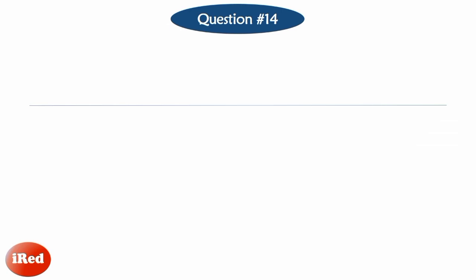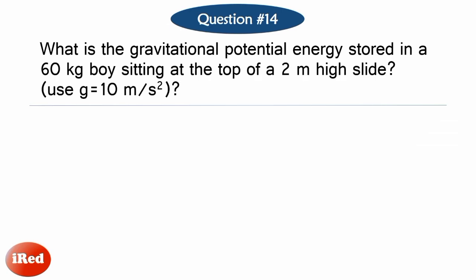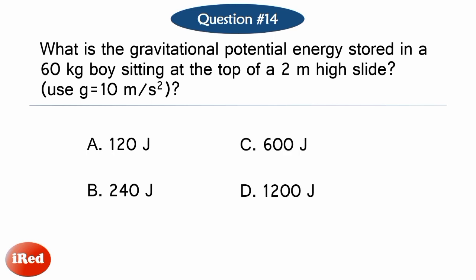Number 14. What is the gravitational potential energy stored in a 60 kilogram buoy sitting at the top of a 2 meter high slide? Use 10 meters per second squared as the value of acceleration due to gravity. Letter A, 120 joules. Letter B, 240 joules. Letter C, 600 joules. Letter D, 1,200 joules.